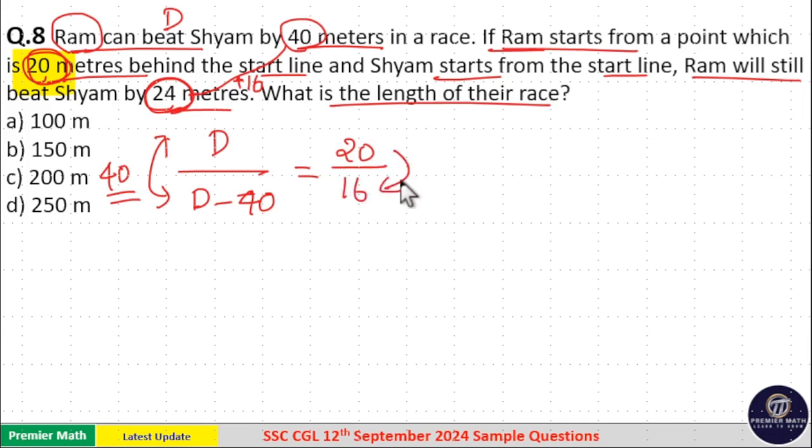Now, the difference is equal to 20 minus 16, 4 parts. This is the ratio difference. But in actual difference, the actual difference in the question is 40 meters.